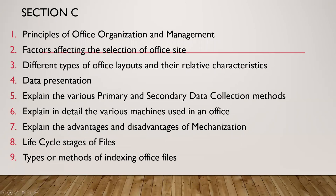Section C is for 12 marks. Topics include: principles of office organization and management; factors affecting the selection of office site; different types of office layouts and their relative characteristics — you have to draw the types of layout; data representation or presentation of data; explain various primary and secondary data collection methods; explain in detail the various machines used in an office; advantages and disadvantages of mechanization or automation; life cycle stages of files; types or methods of indexing office files.